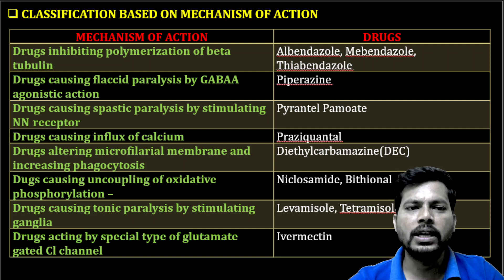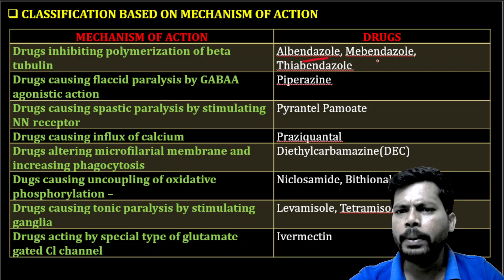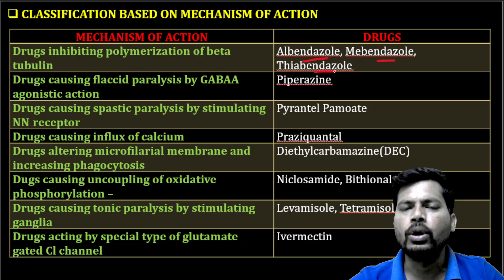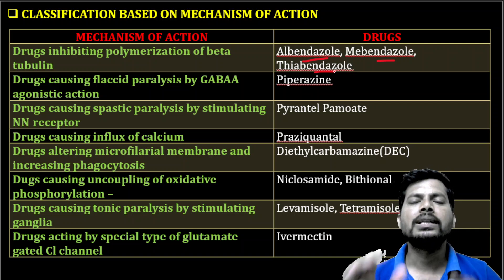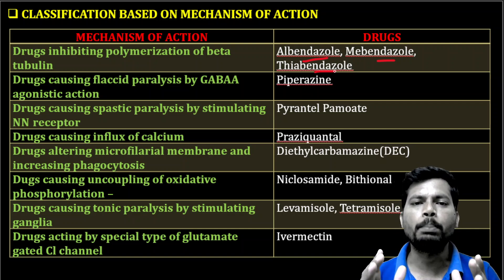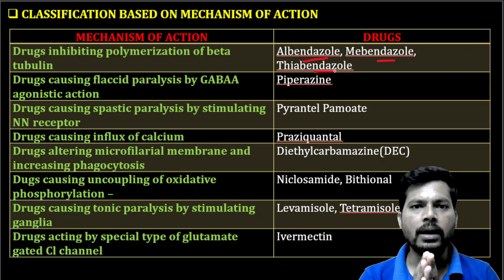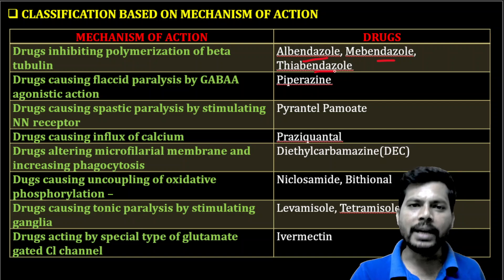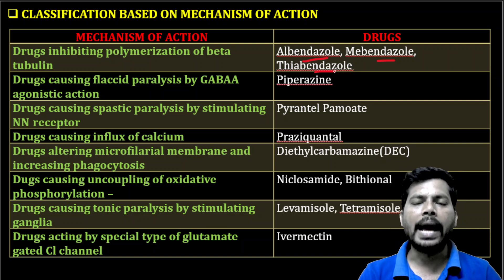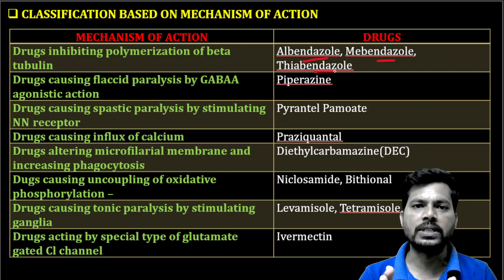Here is the list of drugs along with their mechanism of action. The first drugs are albendazole, mebendazole, and thiabendazole — all are chemically benzimidazoles. These drugs act by binding to the beta-tubulins of the helminth. Their action is similar to colchicine and plant anti-cancer drugs, which also act by binding to beta-tubulin and affecting cell division.